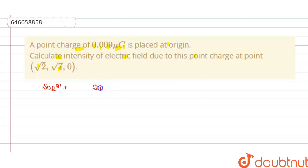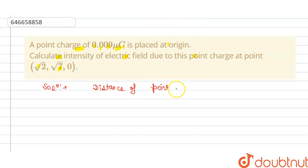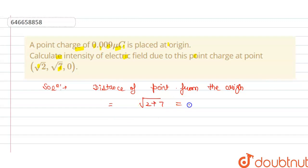We have the distance of the point from the origin. The distance r is equal to √(2 + 7), that is √9, and this is equal to 3 meters.